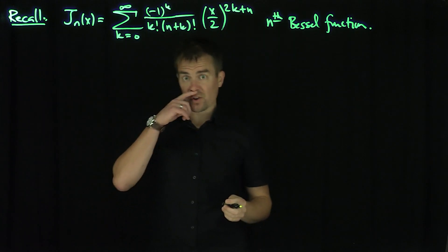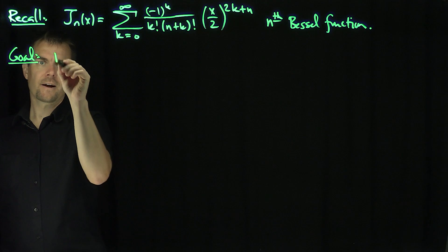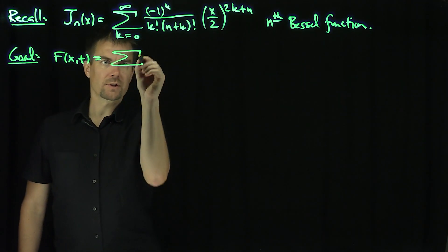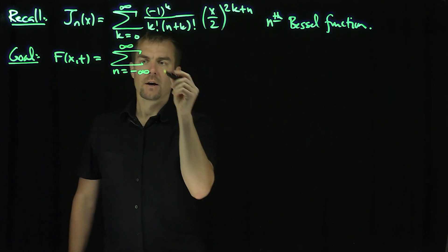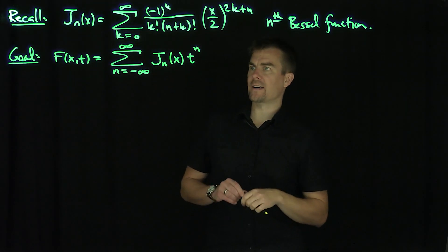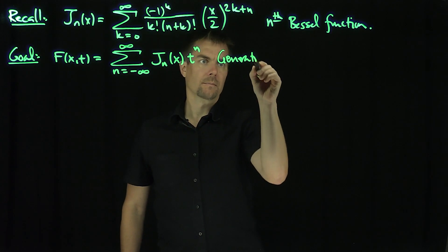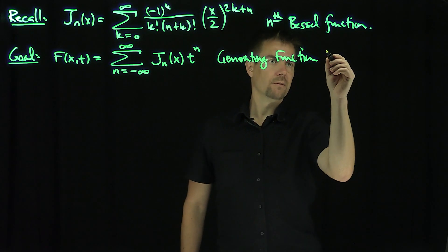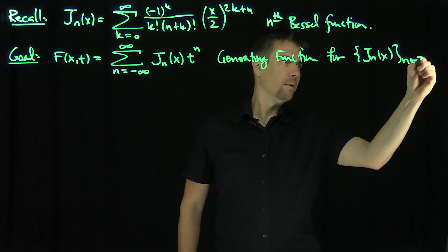Now I would like to find a recursion relationship. Our goal is to find a function f of x and t such that it equals the Laurent expansion over n going from negative infinity to positive infinity of j_n of x times t to the power of n. This is the generating function for the sequence of Bessel functions j_n.